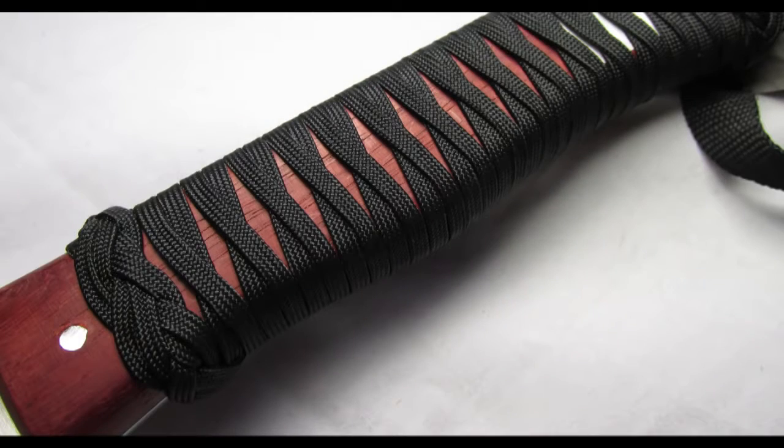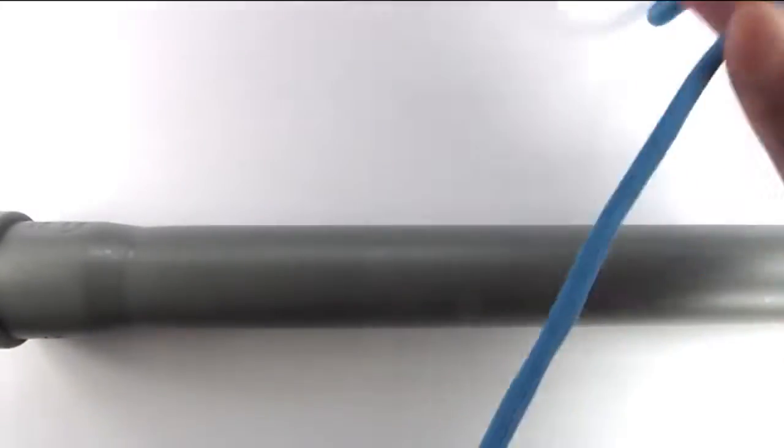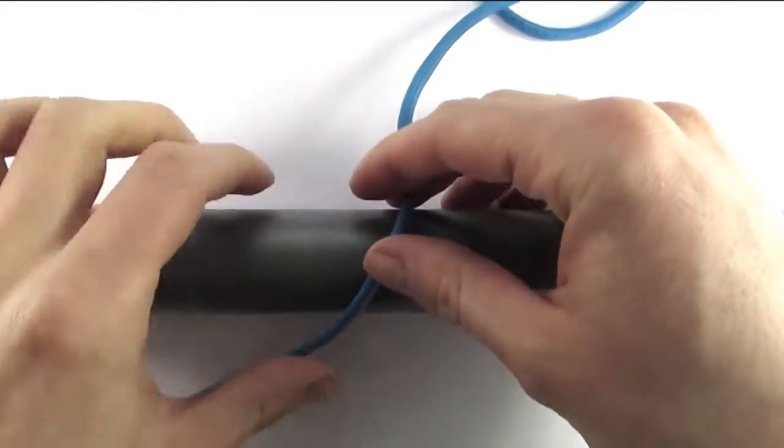You can see it applied here at the bottom of this sword wrap. You're going to need a mandrel, as well as some paracord or any cord for that matter. I'm also going to be using a lacing needle.